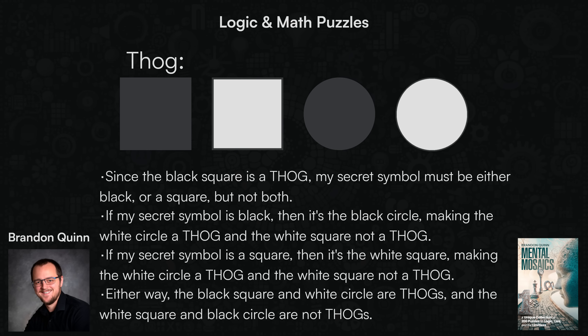Both possibilities lead to the same outcome. This actually means we didn't even need to determine which symbol is my secret symbol. We just had to follow the logic to see that the white circle is definitely a Thog, and we know from the problem that the black square is definitely a Thog, and therefore the other two symbols are definitely not Thogs — they are either the secret symbol I selected or have no relation to the secret symbol I selected whatsoever.